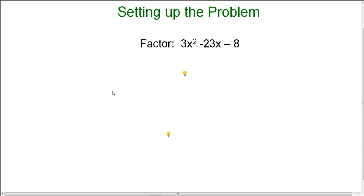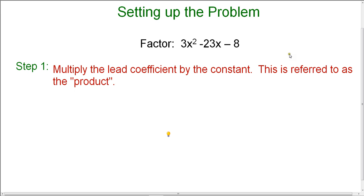When we use the grouping method, we first have to set up the problem. This trinomial, the way it's set up now, is not set up to factor by grouping. If you remember from our factoring by grouping lesson, we need at least four terms that we can group in pairs in order to factor. So we need to set this up. The first thing we're going to do is multiply the lead coefficient by the constant.